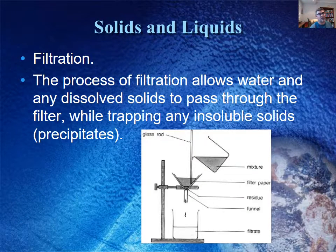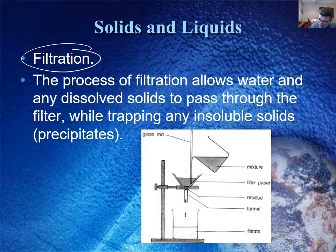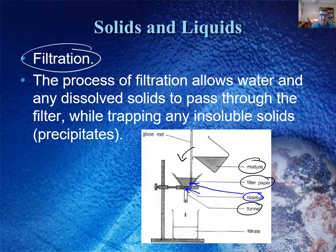If we have solids and liquids, there are a couple of methods depending on whether or not the solid is soluble in the liquid. If the solid is not soluble — if it's a precipitate, for example — then the method we choose is filtration. We use a filter funnel and filter paper, and the mixture is poured into the filter funnel. There are two important terms: the residue, which is the solid that collects in the filter funnel, and the filtrate, which is the liquid component that drips through.